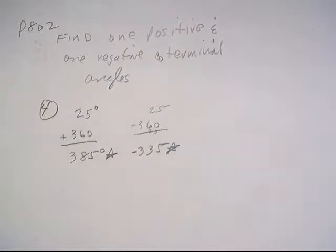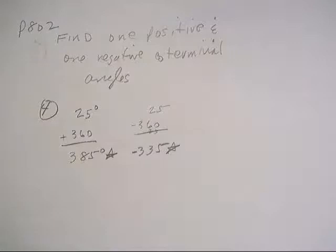You can do that on your calculator if you need to. So there's one positive and one negative co-terminal angle, and we're over and out on this problem. We'll be back.